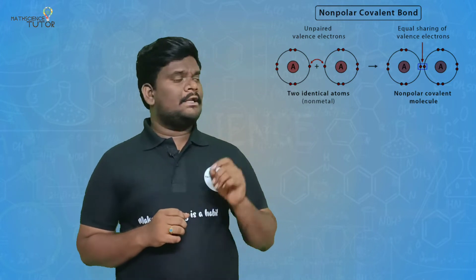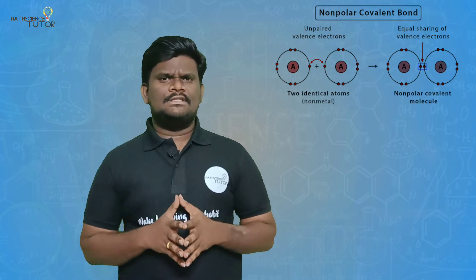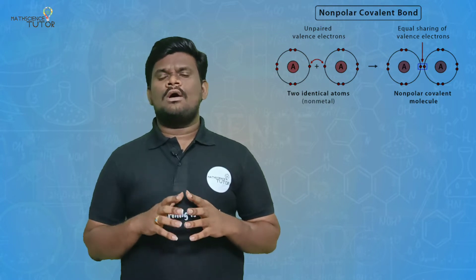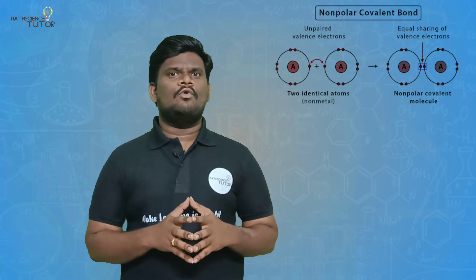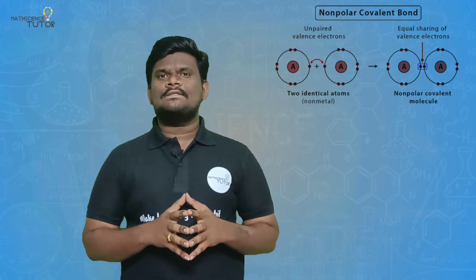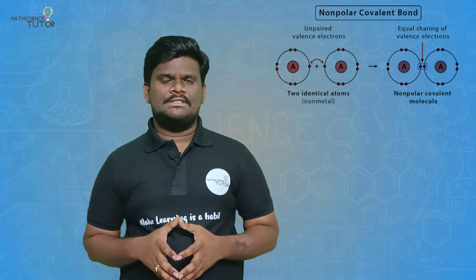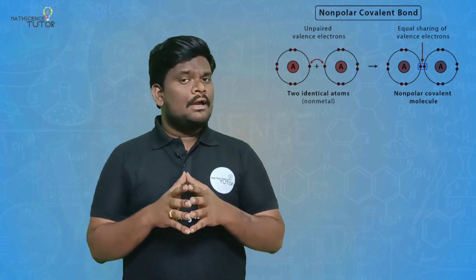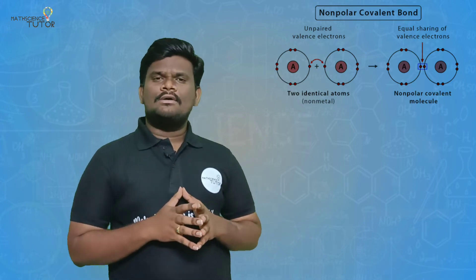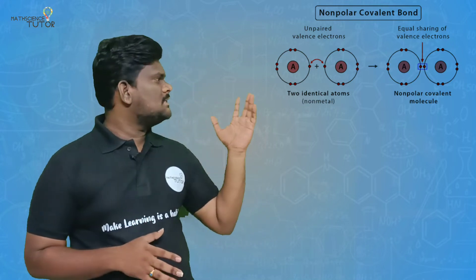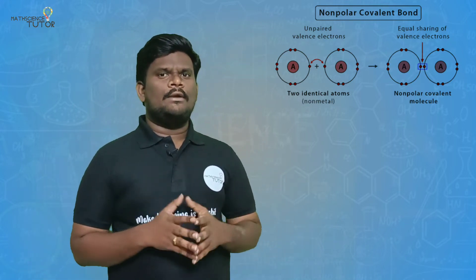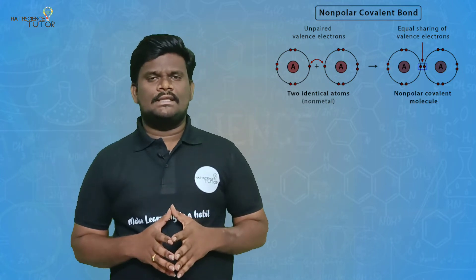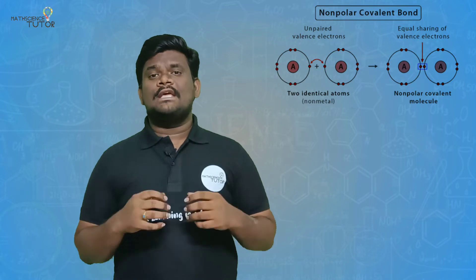For example, when two oxygen atoms bond in their free state, oxygen exists as a gas with the formula O2. O2 is formed from two oxygen atoms, and it is a covalent bond because oxygen is a non-metal. These two oxygen atoms form a stable molecule.